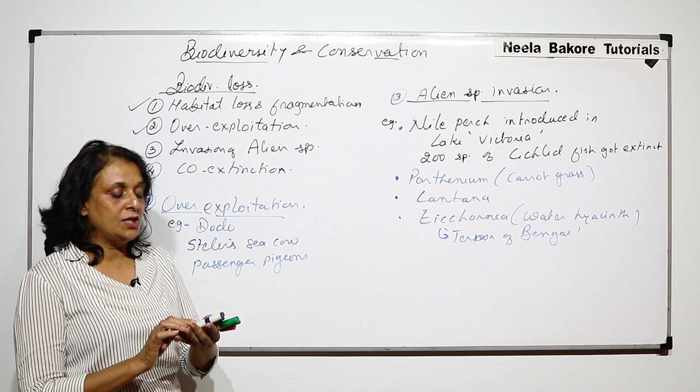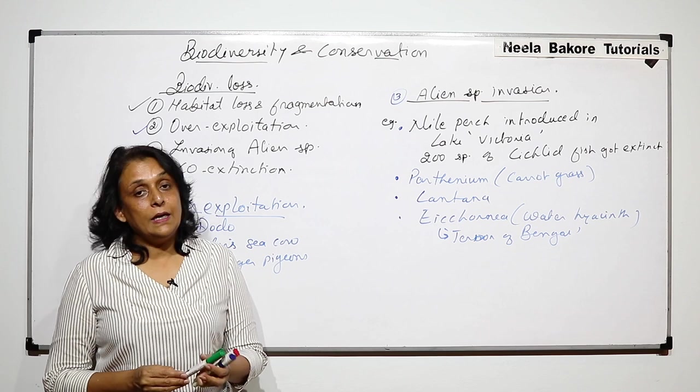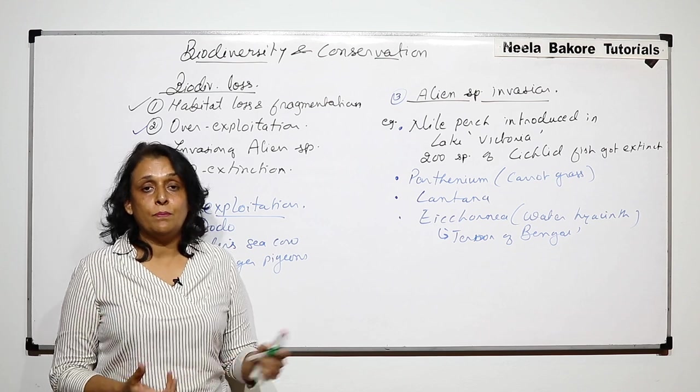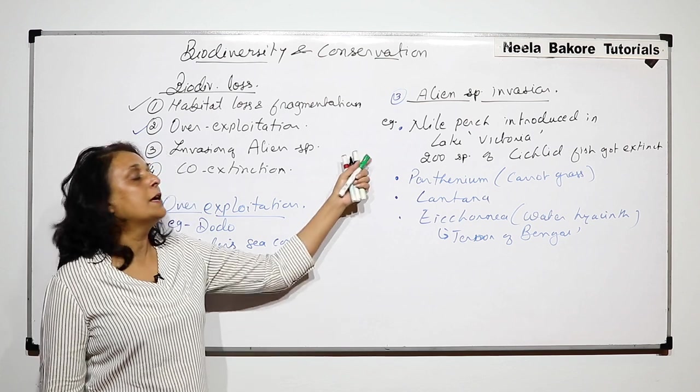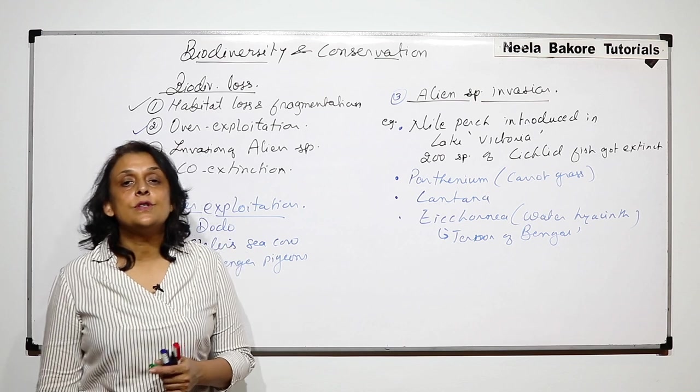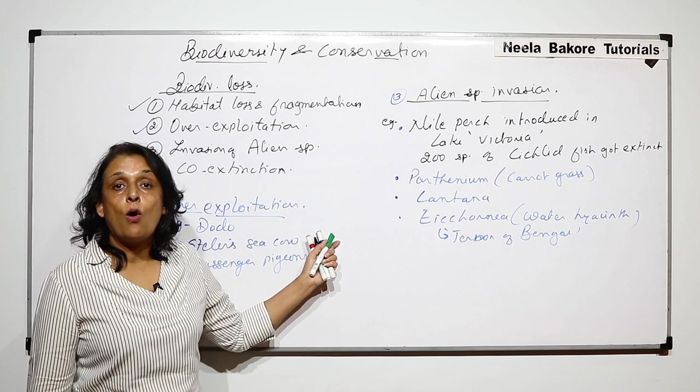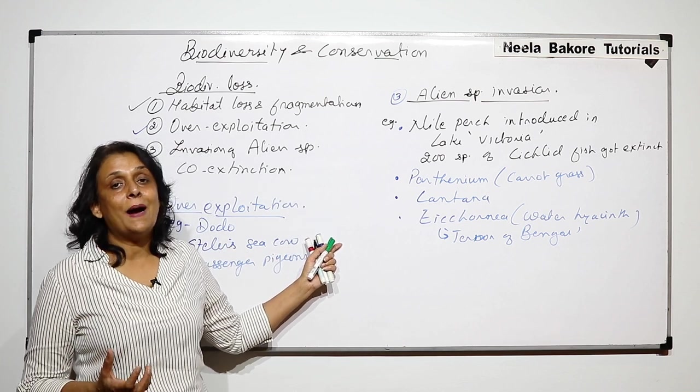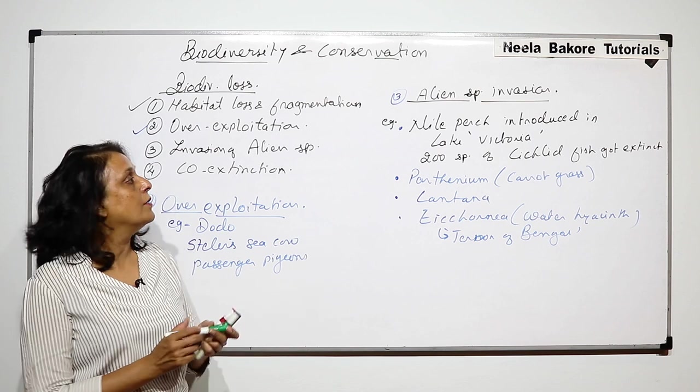Alien species invasion can be by purposeful invasion—that means we are bringing them in—or accidental. In both ways, it is going to result in loss of the natural biodiversity of that particular area.